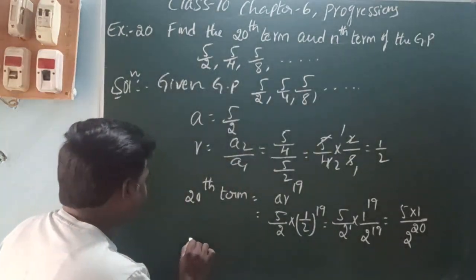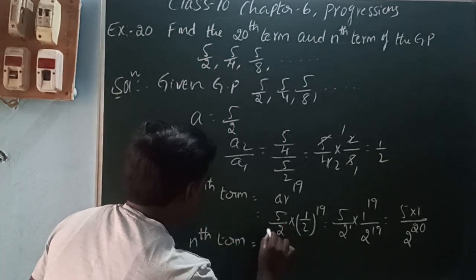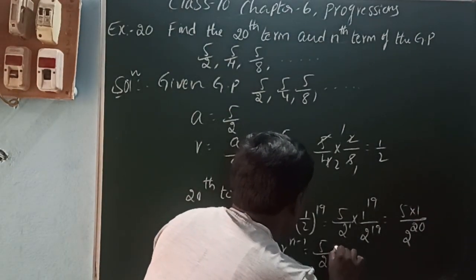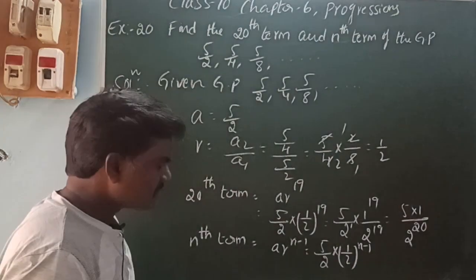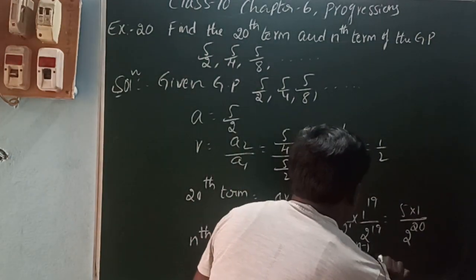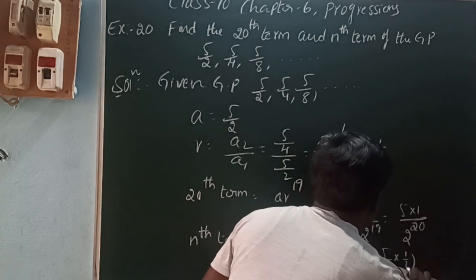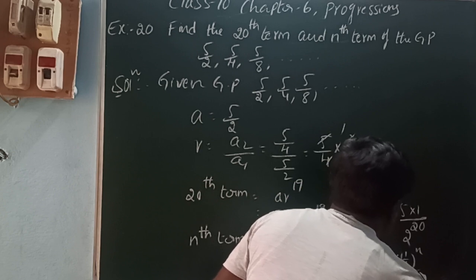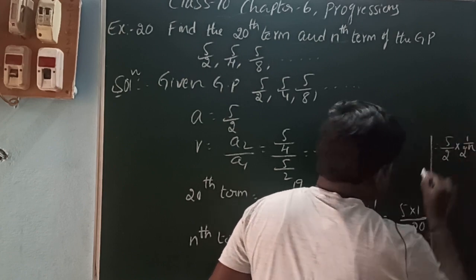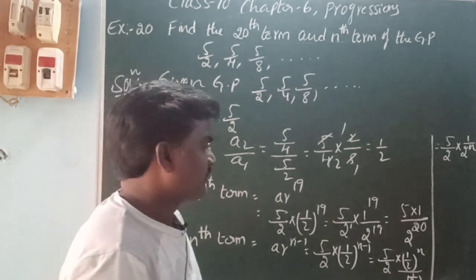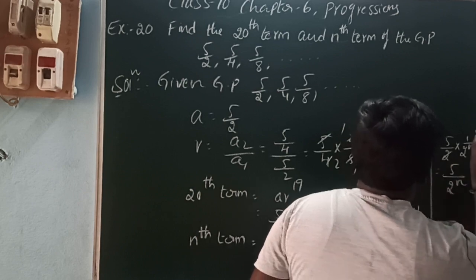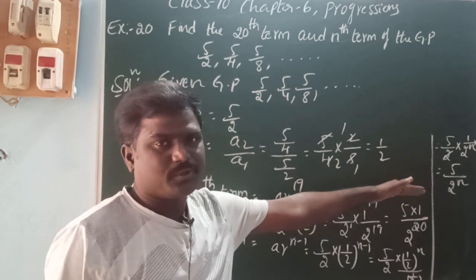Next, what they are asking is the nth term. The general form of the nth term of a GP is a·r^(n-1). That is equal to 5/2 into (1/2)^(n-1). Using a^(m-n) = a^m / a^n, we simplify. The denominator fraction becomes reciprocal, the 2s cancel, giving the nth term as 5/2^n.